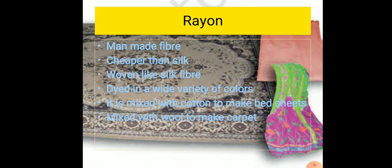Towards the end of the 19th century, scientists were successful in obtaining a fiber having properties similar to silk—rayon. This fiber was obtained by chemical treatment of wood pulp and is also known as artificial silk. Although rayon is obtained from a natural source, wood pulp, it is a man-made fiber. It is cheaper than silk and can be woven like silk fibers.